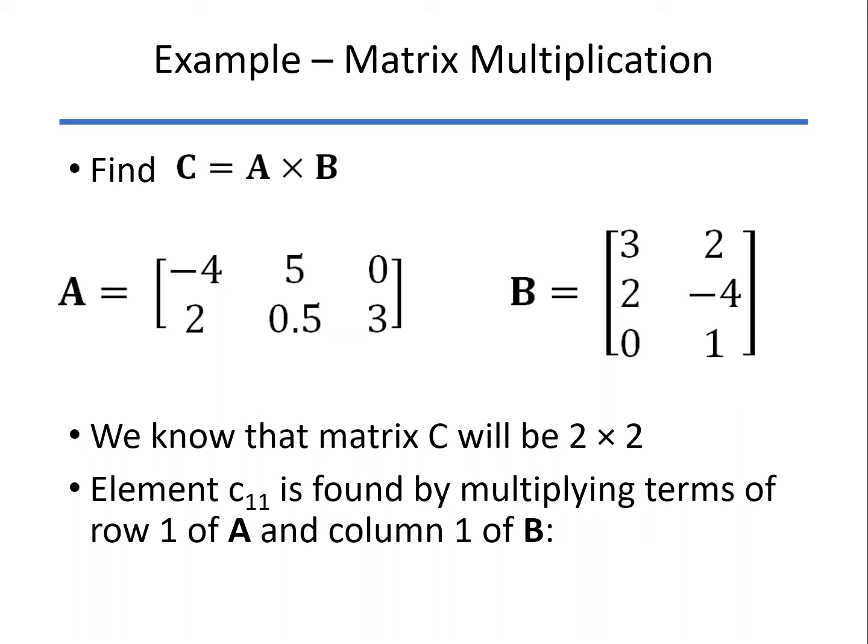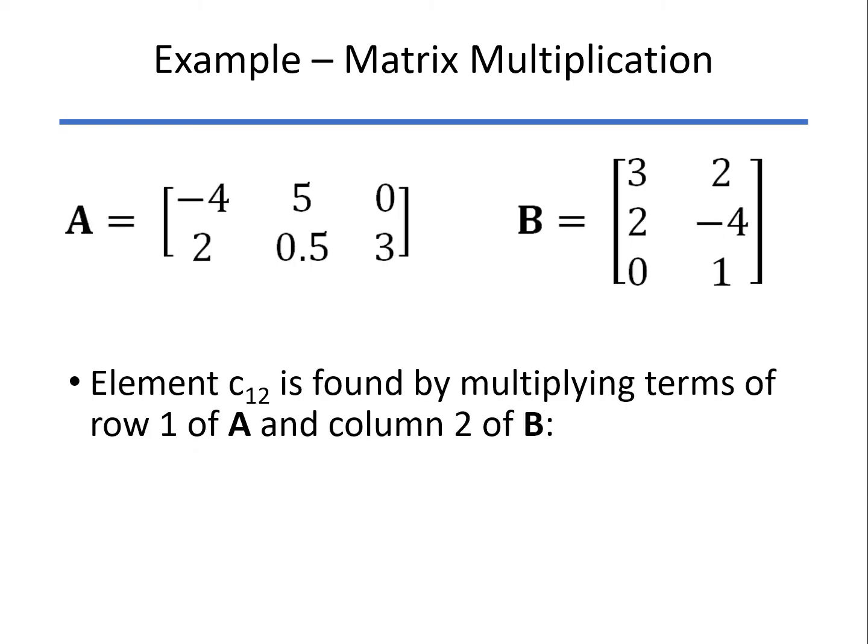Let's show how that's going to work. Element C11, we take the first row of A and multiply each element there by each element of the first column of B and sum those up. In this case, C11 will be minus 4 times 3 plus 5 times 2 plus 0 times 0, and the answer is minus 2.